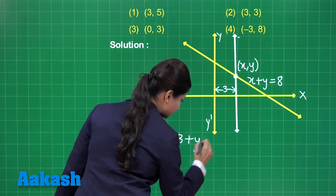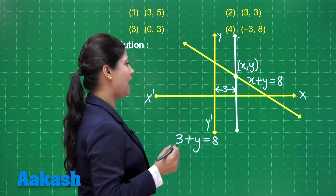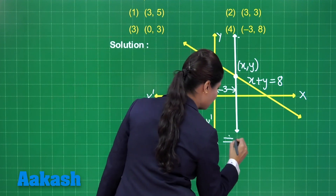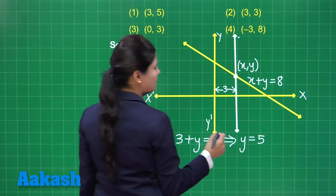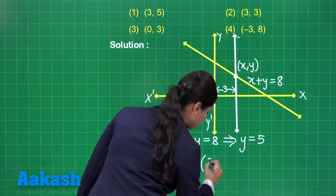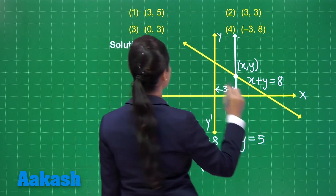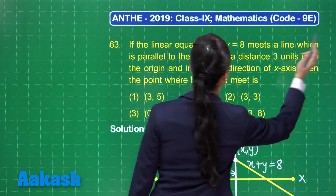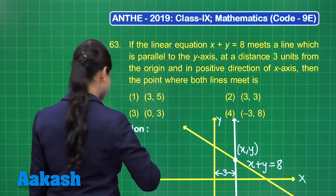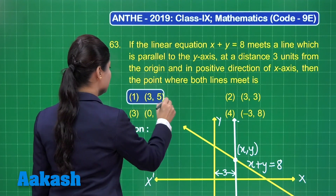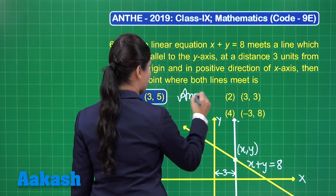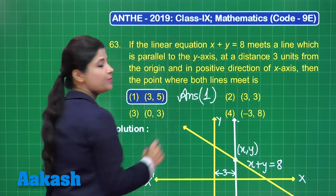If x is 3, substituting into the equation gives 3 plus y equal to 8, so y equals 5. This point has the coordinate 3 comma 5. Therefore, both lines meet at the point with coordinate (3, 5), which is present in option number 1. So the correct answer for this question is option 1.